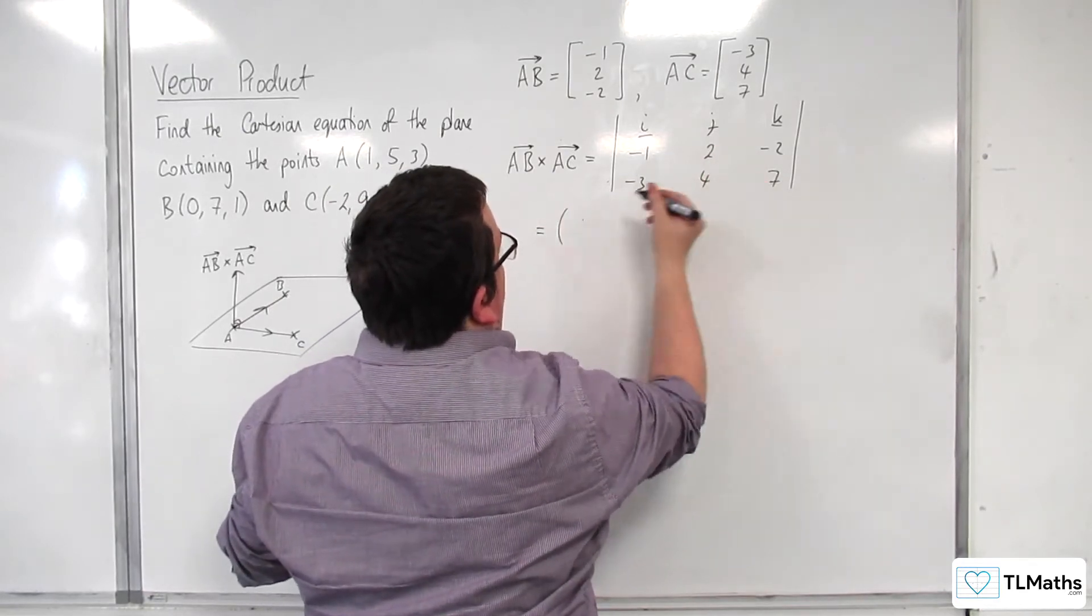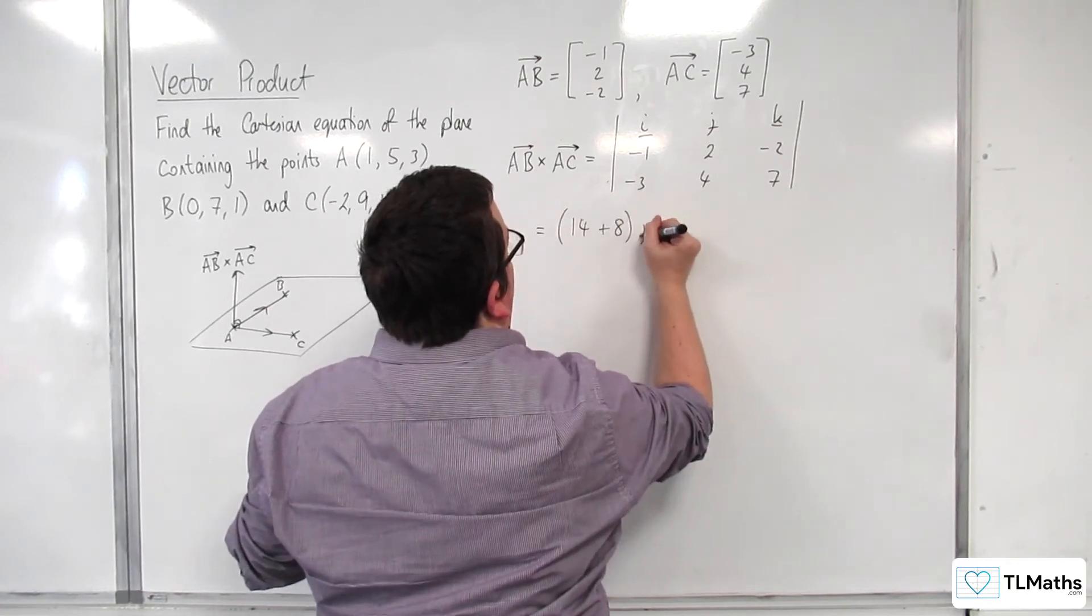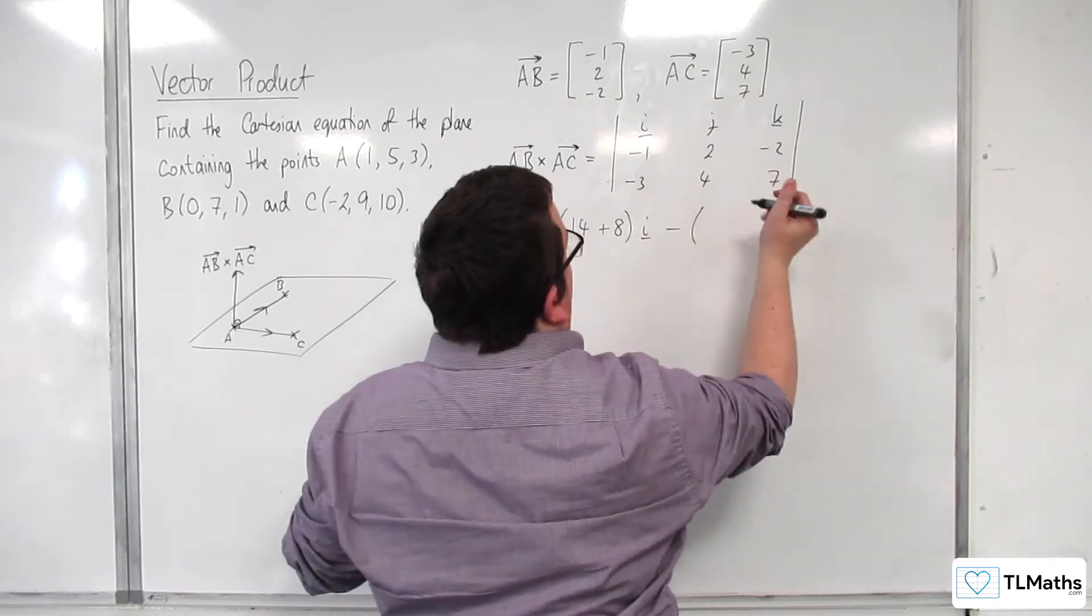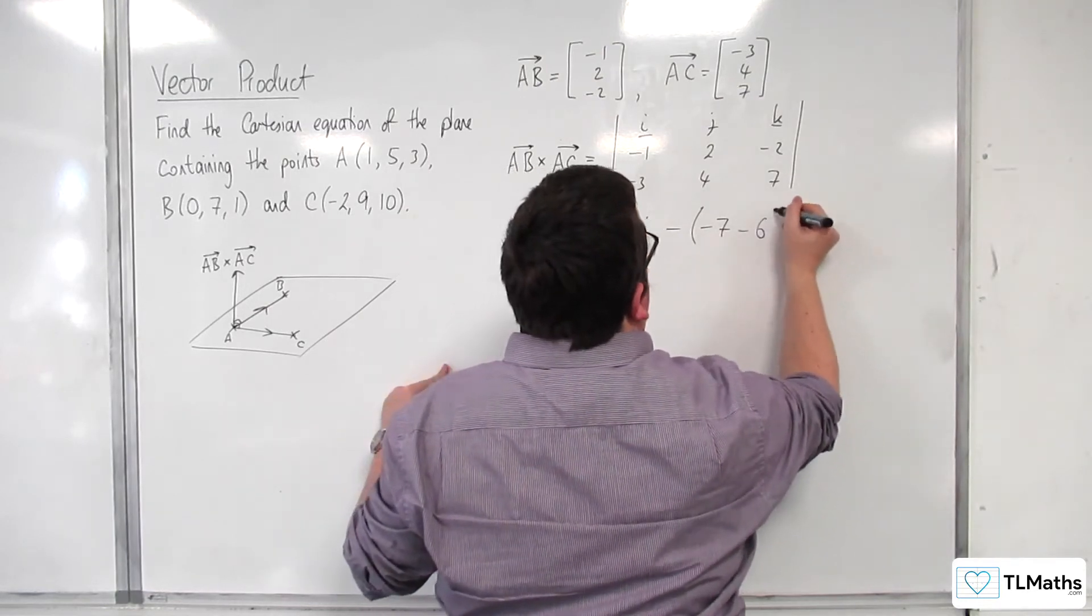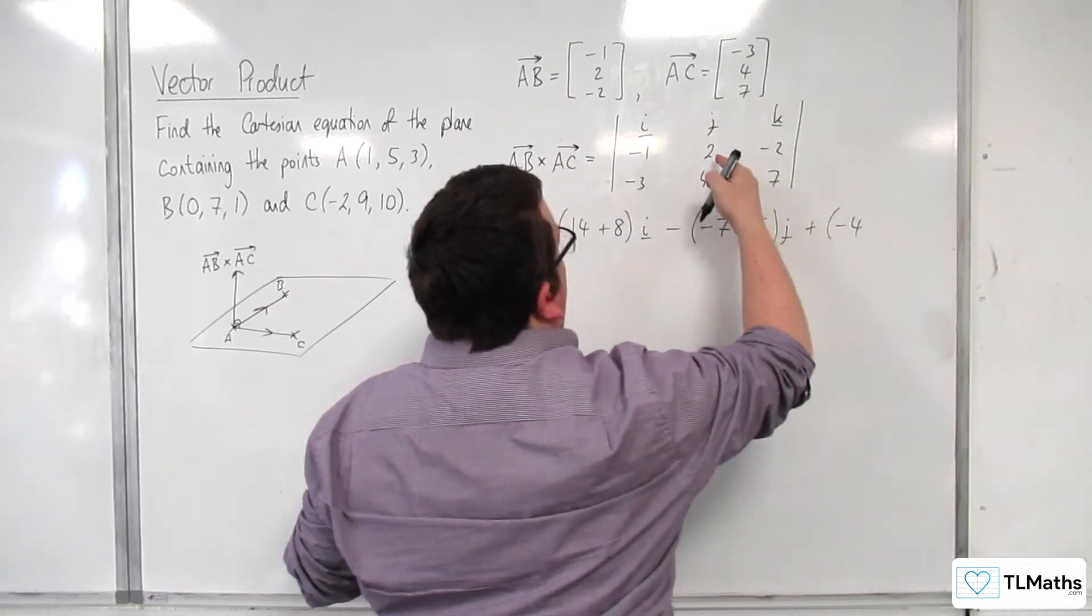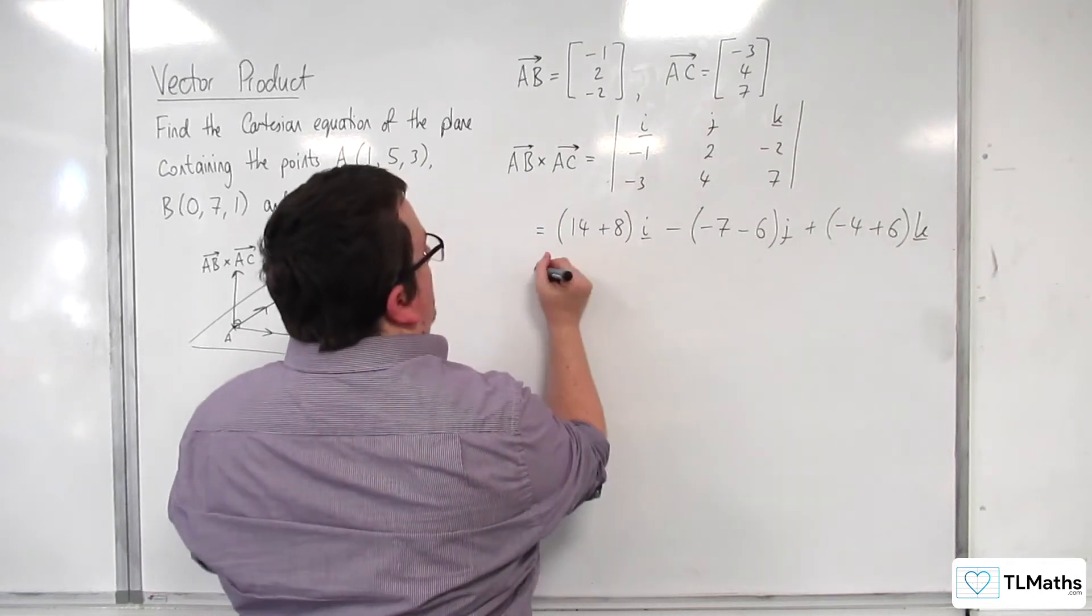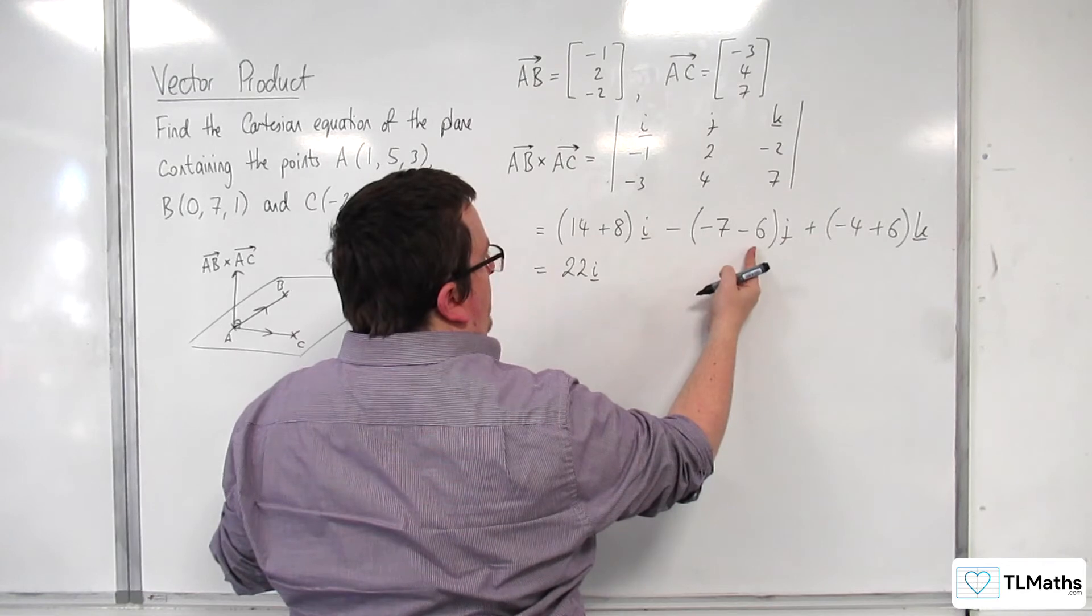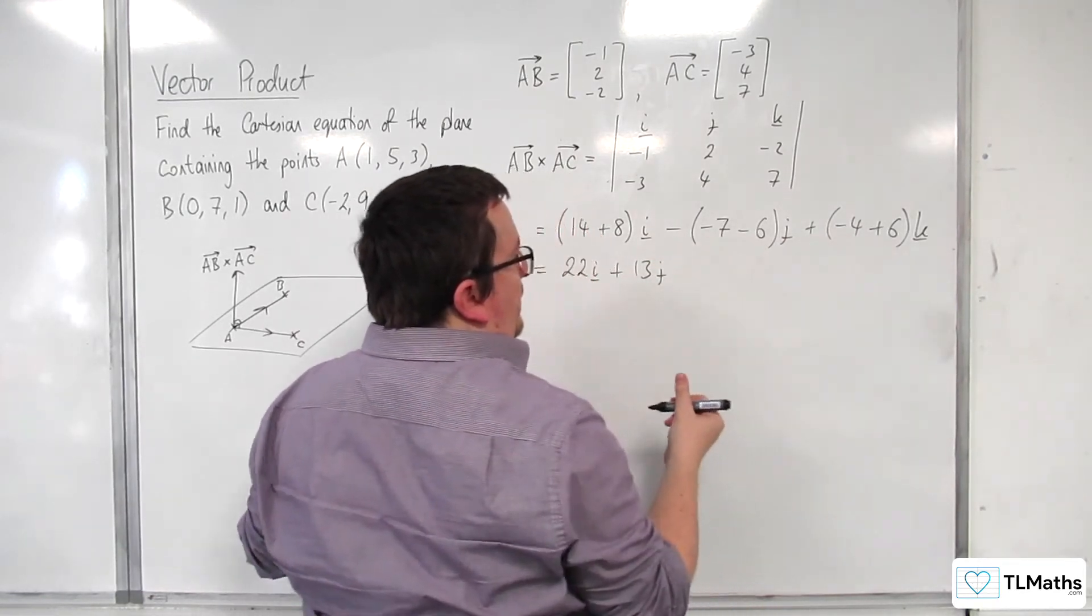So we've got 2 times 7 take away minus 2 times 4, so plus 8I. Then we're going to have minus 1 times 7 is minus 7, minus 2 times minus 3 is 6, so take away 6J. And then minus 1 times 4 is minus 4, 2 times minus 3 is minus 6, so add 6K. So we've got 22I, minus 7 take away 6 is minus 13, so plus 13J, and we've got minus 4 plus 6 is 2K.